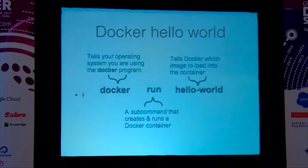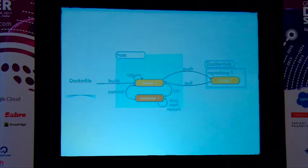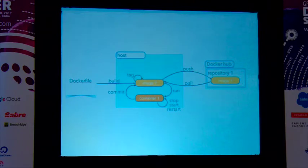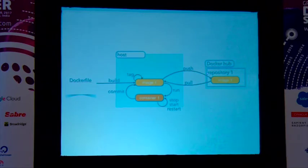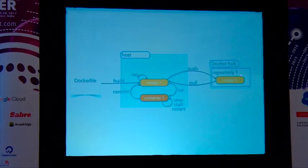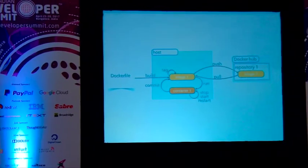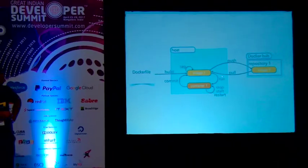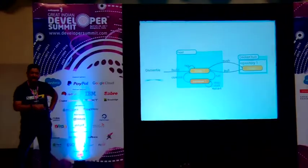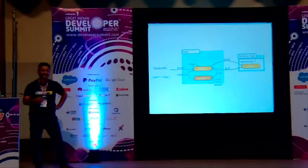To summarize the Docker workflow: you create a Dockerfile, build a Docker image, then push it to the registry. Once pushed, anybody can pull from that registry and run it. That's the state diagram of the Docker workflow.